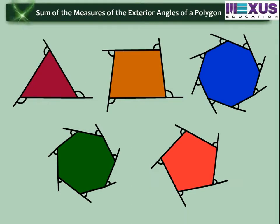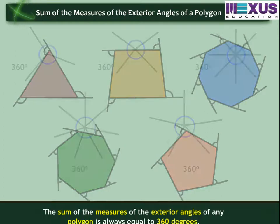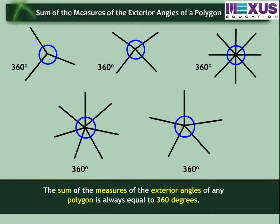If we check for other polygons too, you will notice that the sum of the exterior angles remains the same as 360 degrees. Therefore, the sum of the measures of the exterior angles of any polygon is always equal to 360 degrees.